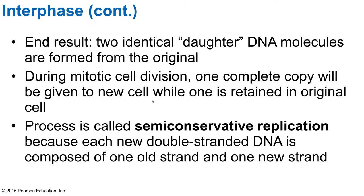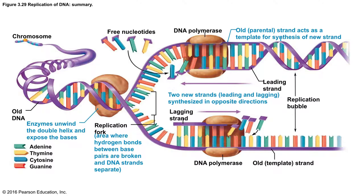The end result is two identical daughter DNA molecules formed from the original. During mitotic cell division, one complete copy is given to each new cell. This process is called semi-conservative replication because each new double-stranded DNA is made up of one old strand and one new strand. So each new DNA molecule consists of an original strand and a new strand — that's semi-conservative replication.